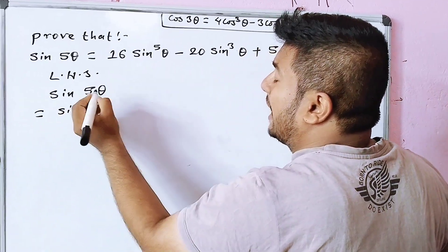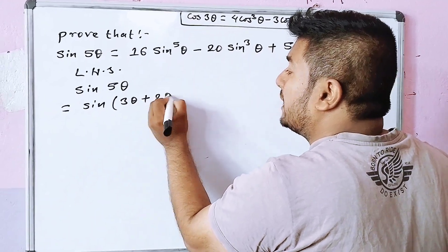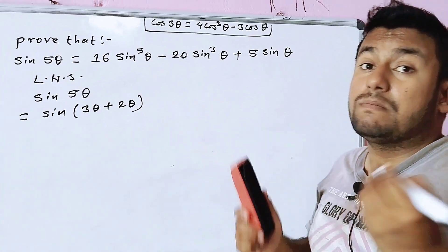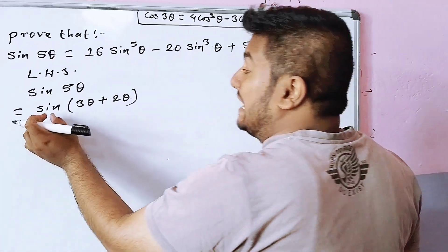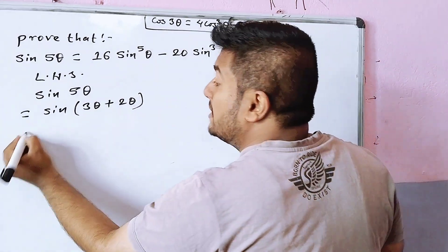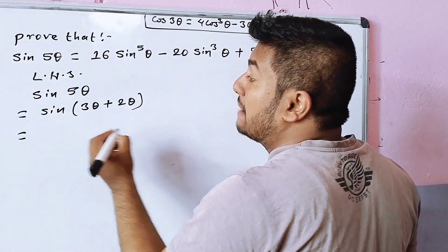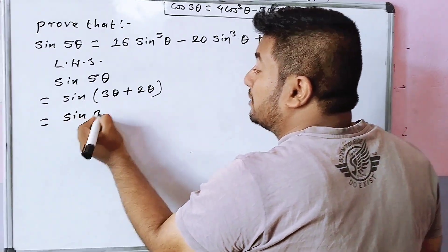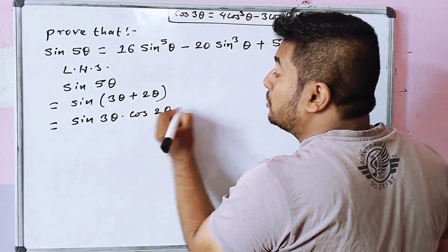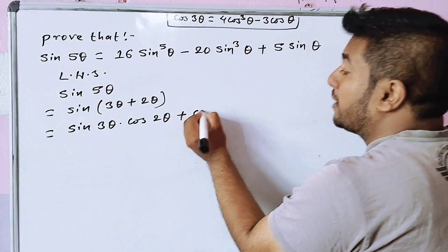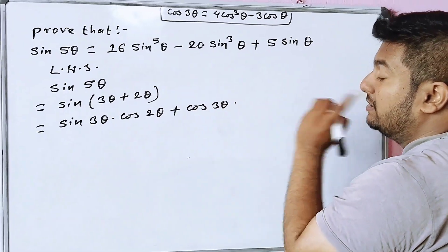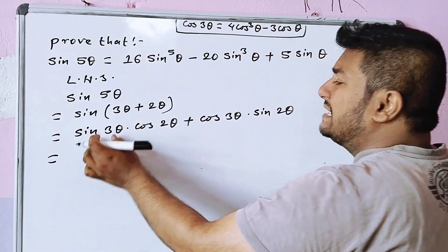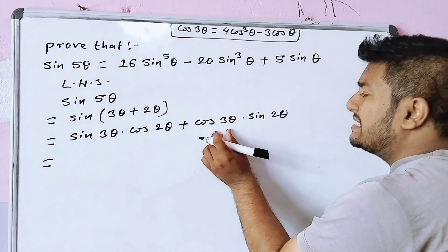We will write sin 5θ as sin(3θ + 2θ). Now applying the formula sin(A + B) = sinA cosB + cosA sinB. So we get sin 3θ into cos 2θ plus cos 3θ into sin 2θ.